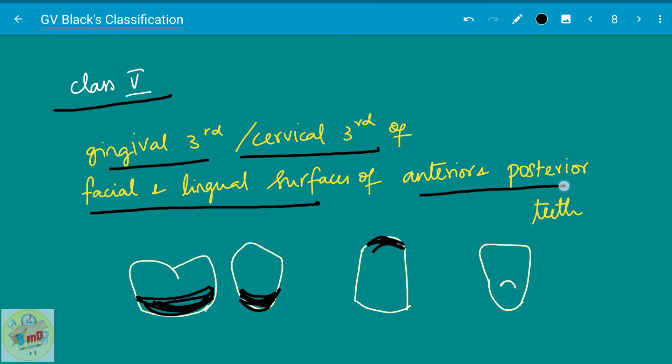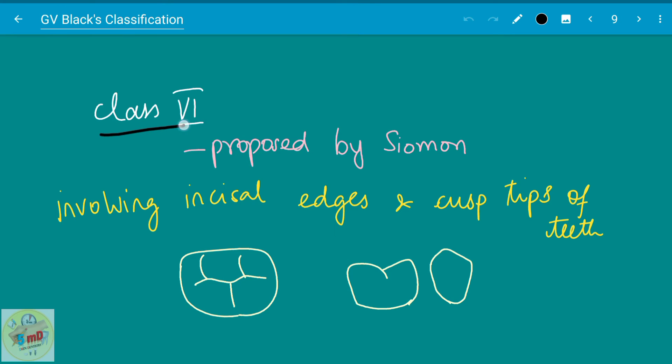The final class, class six, it was proposed by Simon, involving the incisal edges and the cusp tips of the teeth, that is incisal. It is the least frequently occurring caries because incisal cusp tips of posteriors are the last things to be affected by caries. So when they are affected by dental caries, it is class six. So hope you all got an idea on GV Black's classification.